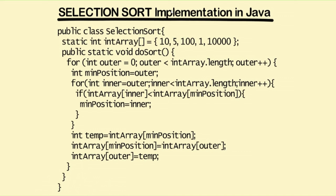We swap the element at index outer in the array intArray with the element at index minPosition. As we keep doing this, the outer value keeps increasing — our iteration number increases, and so does the sorted sublist. The sorted sublist keeps on growing and the unsorted sublist keeps on shrinking.